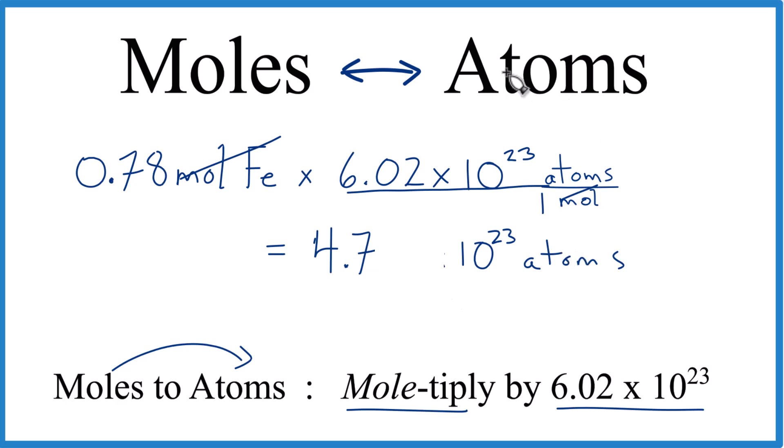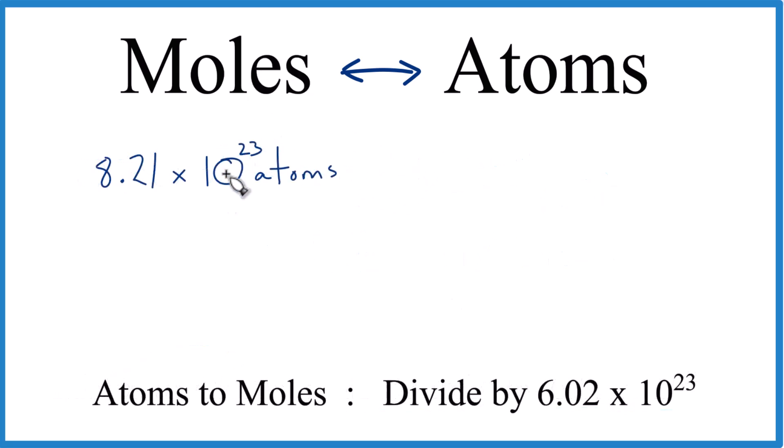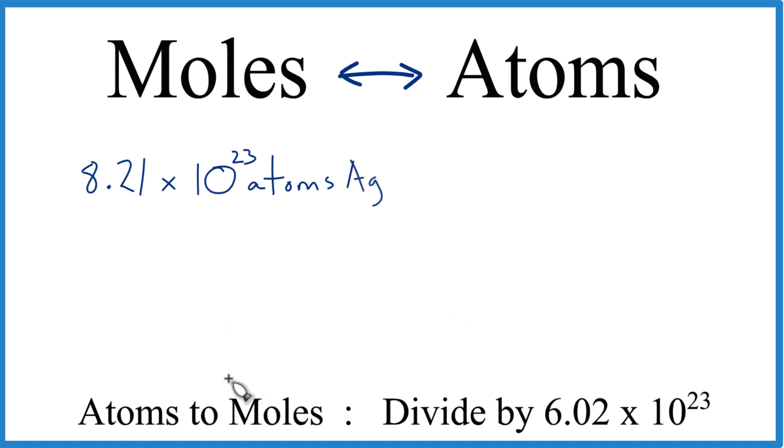Let's take a look at what happens when we go from atoms to moles. So let's convert 8.21 times 10 to the 23rd atoms, and these could be atoms of anything. Let's say silver. When we go from atoms to moles, now we're going from atoms to moles. So we're doing the reverse. We divide by Avogadro's number, like this.